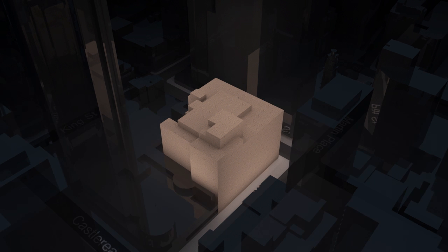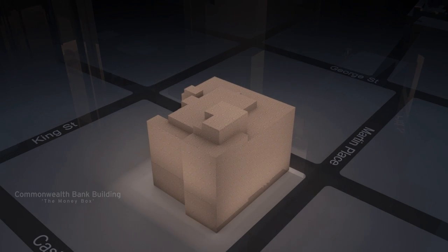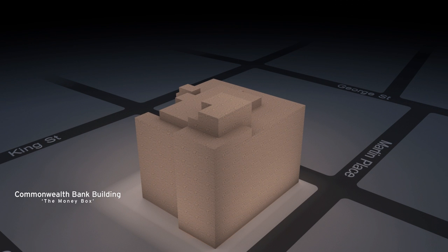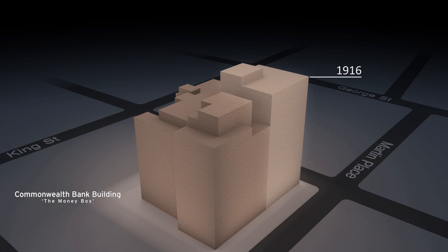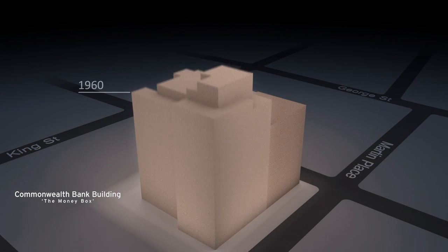This is the Five Martin Place site before construction, when it was known as the Moneybox. It was constructed in three main stages, originally built in 1916 with an extension added on in 1930 and then in 1960.